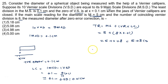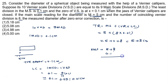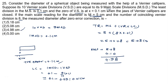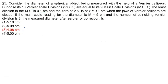After applying zero error correction, the net reading equals 5.08 minus the positive error of 0.1 cm. Calculating: 5.08 minus 0.10 gives 4.98 cm. Therefore the correct answer is 4.98 cm, which is option number 3.